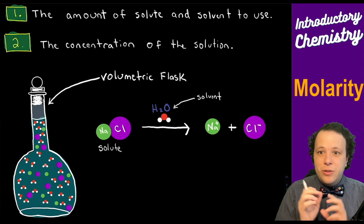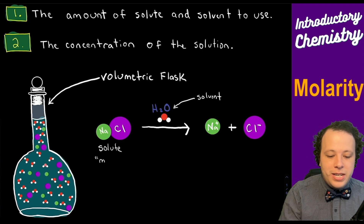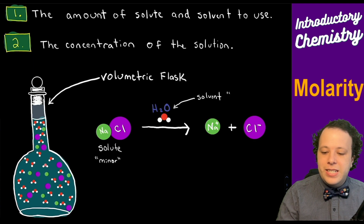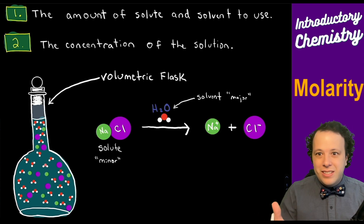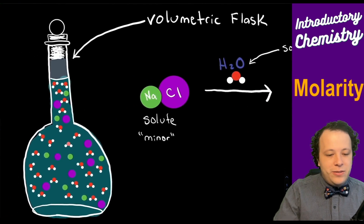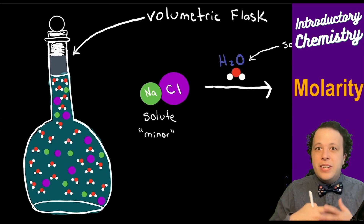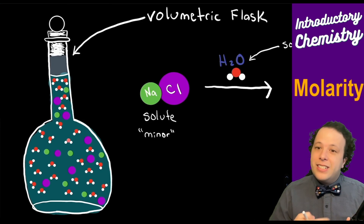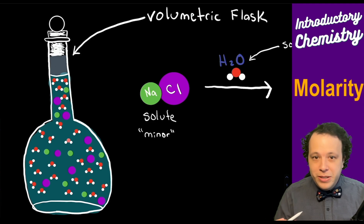The reason why these two are labeled this way: the solute is always referred to as the minor component, and the solvent is the major component — whatever is contained the most. So if we have our little volumetric flask, NaCl is going to dissociate and be soluble, which we talked about in a previous video regarding solubility.